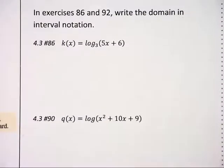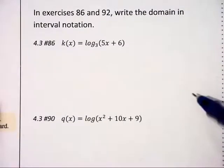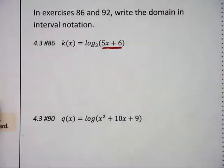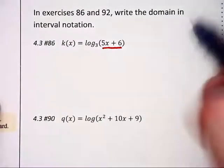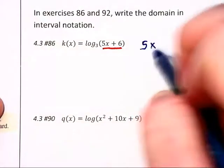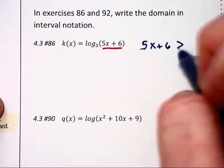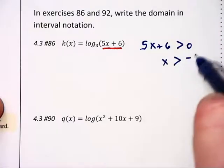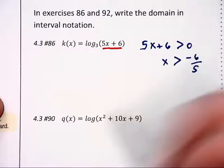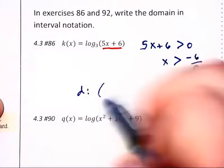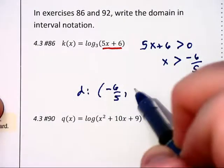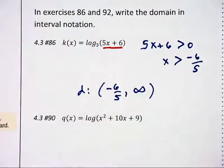We are now being asked to find the domain of a couple of logarithmic functions. We know that the argument must be positive. It cannot be 0, nor can it be negative. So 5x plus 6 must be greater than 0. And that means x must be greater than negative 6 over 5. And so our domain is from negative 6 over 5 to infinity. That's pretty straightforward.